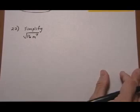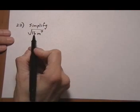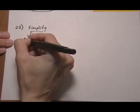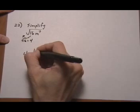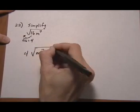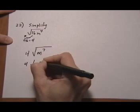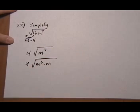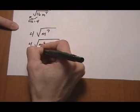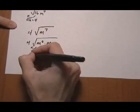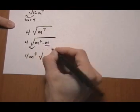Number 22: simplify root of 16m to the 7th. We can do root of 16 — that's going to give us a 4. Root of 16 equals 4, so we have 4 times root of m to the 7th. For m to the 7th, let's rewrite it as m to the 6th times m. Then we can say square root of m to the 6th is m cubed. So we get 4m cubed, and the leftover is root m.